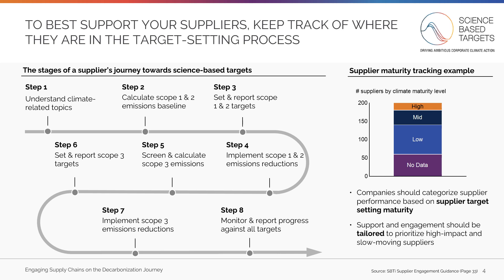The data collected from suppliers described in the last module should help you track where your suppliers are in this journey. As data is gathered, you can categorize performance based on where your suppliers are in the process. With this information, you can better tailor your support to prioritize suppliers who are high impact and slow moving.